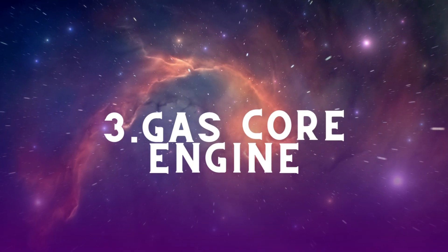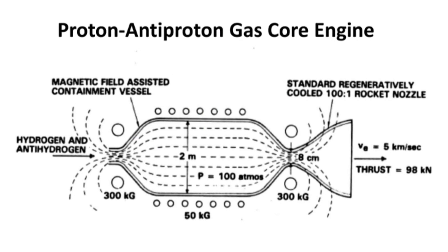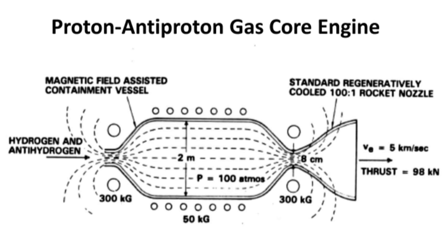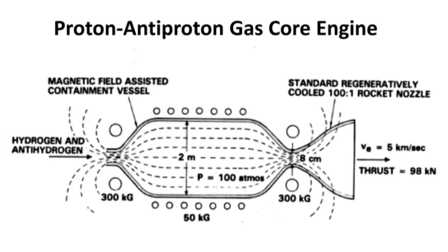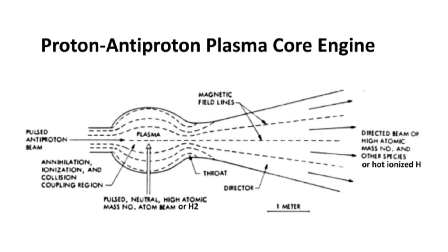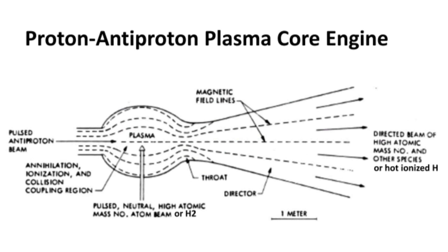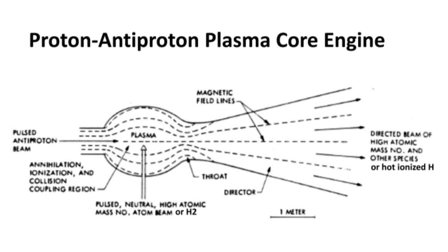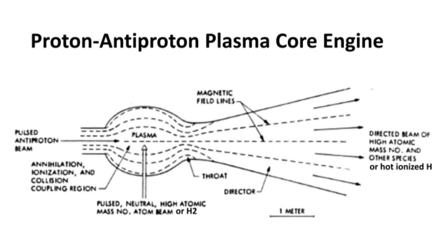In a gas core engine, the idea is to contain antimatter and matter in a magnetically confined vessel. A gaseous mixture of hydrogen and anti-hydrogen is heated to extreme temperatures, causing them to interact and annihilate; the energy released vaporizes hydrogen propellant at high pressure, which is expelled through a nozzle for thrust. The plasma core engine similarly contains antimatter in a containment vessel, mixes it with hydrogen to create plasma, heats it with strong magnetic fields, and then expands it rapidly to generate thrust. In this case, only about 1–2% of the annihilation energy is transferred to the hydrogen.